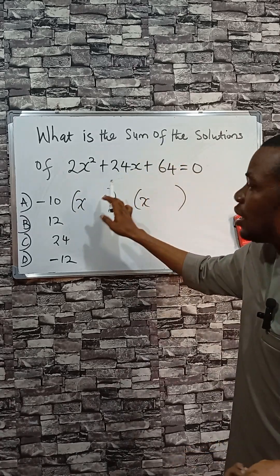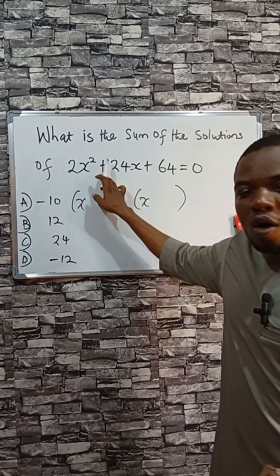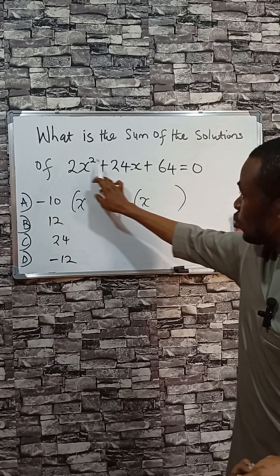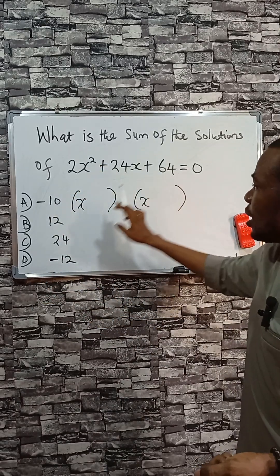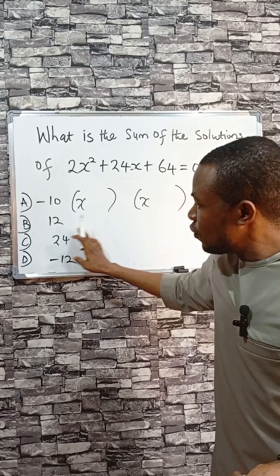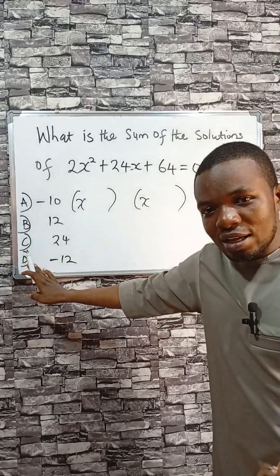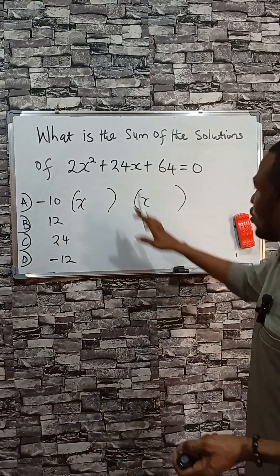That is the addition of the two roots. This equation will have two roots, so the addition of the roots will give one of these as the answer. So one of the ways is to factorize this, but it will take time.